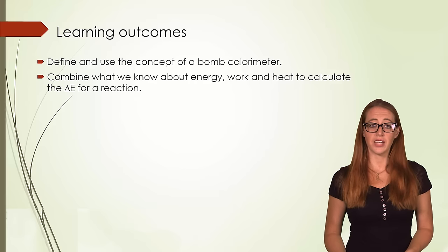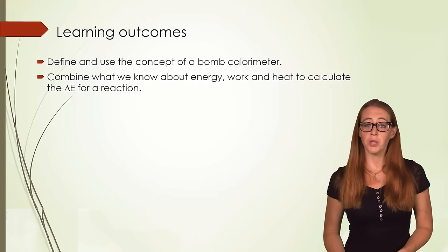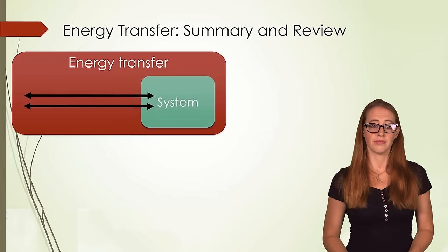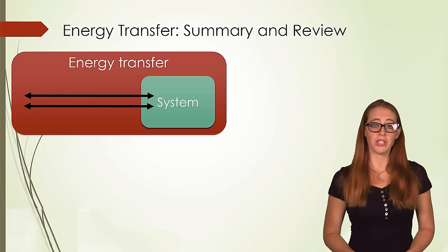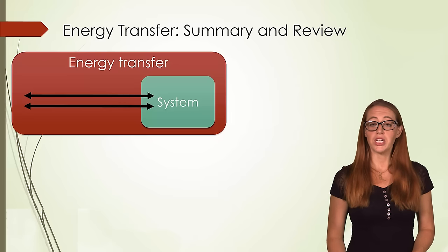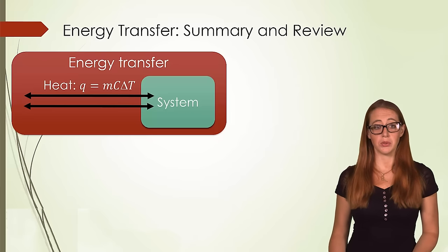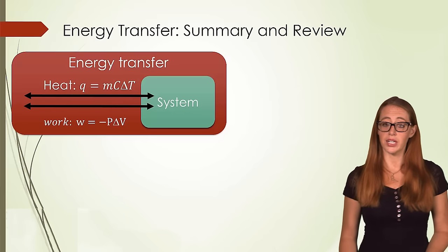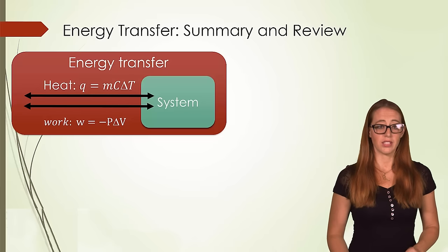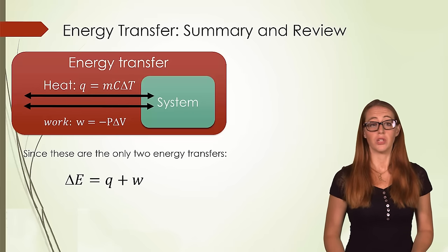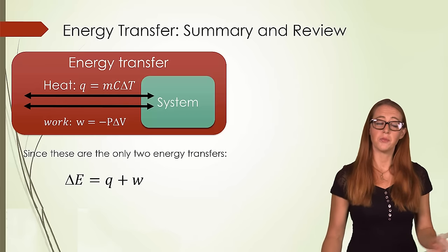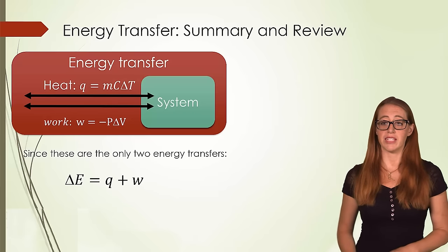For this video, we will define and use the concept of a bomb calorimeter. We'll combine what we know about energy, work, and heat to calculate delta E for a given reaction. Let's do a quick review of what we know so far about energy transfers and energy change. We know that heat and work are the two types of transfers. We know equations for both of them. Heat is equal to Q equals MC delta T, and work is equal to negative P delta V. We also know that these are the only two types of energy transfers, and therefore that delta E would be equal to Q plus W. Since we can calculate Q and we can calculate W, we can now calculate our change in energy.